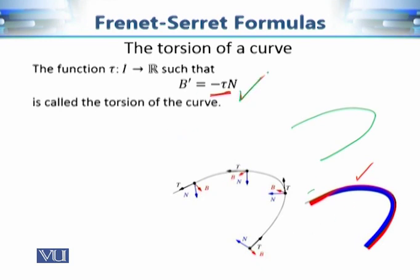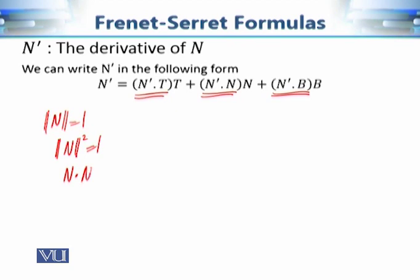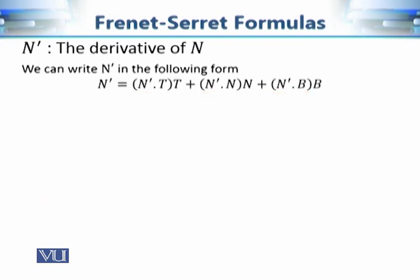Now let's calculate the derivative of N. Using the same basis decomposition, N' = (N'·T)T + (N'·N)N + (N'·B)B. Since N is a unit vector field, N·N = 1, and differentiating gives N'·N = 0, so that coefficient is zero — the same kind of computation as in the case of B'.